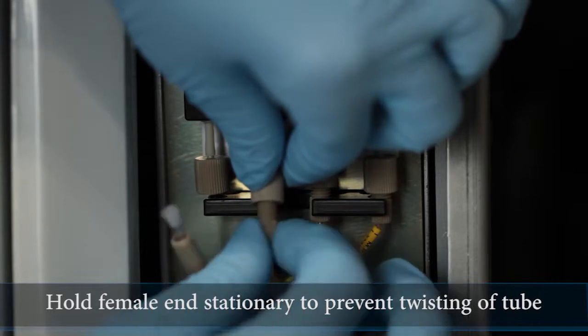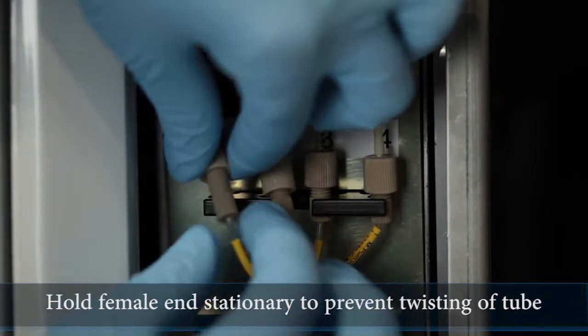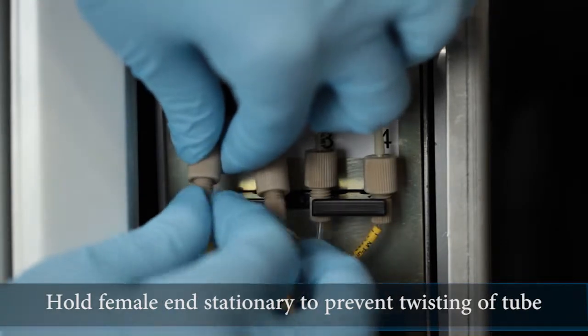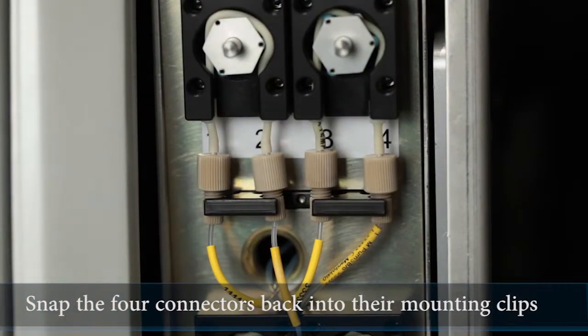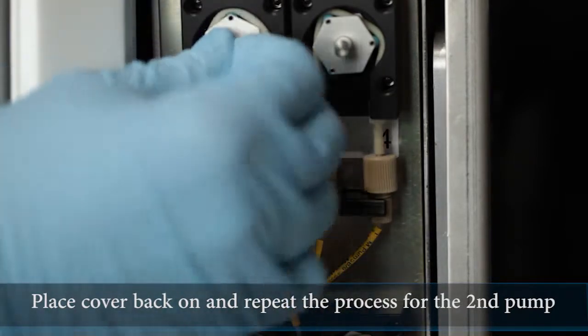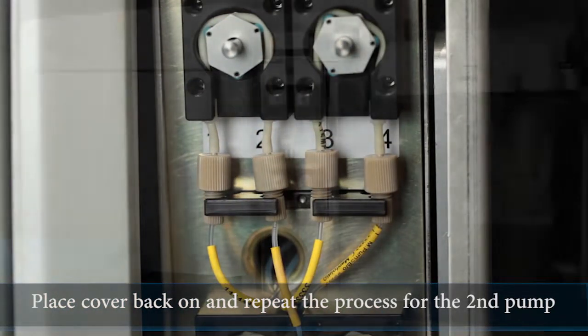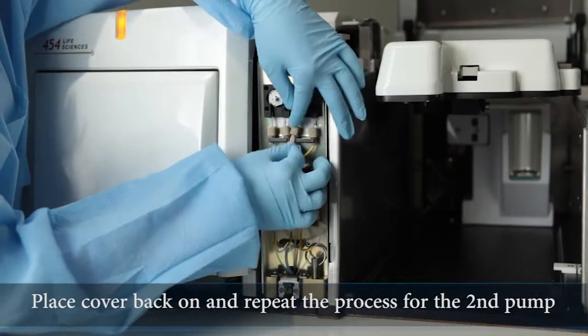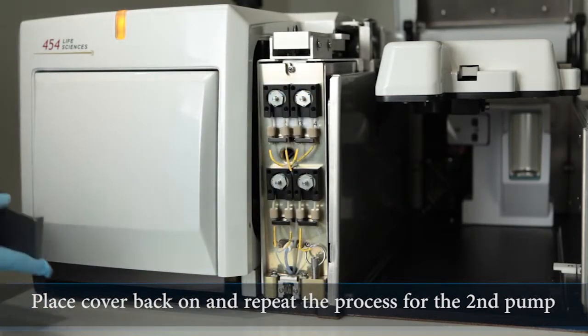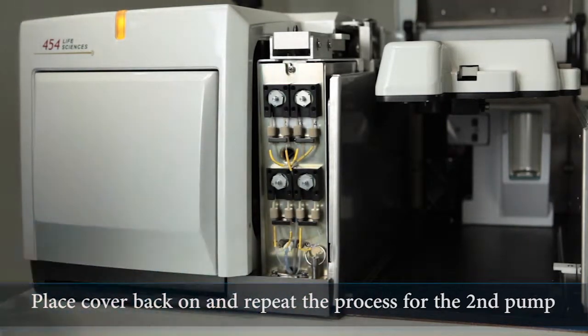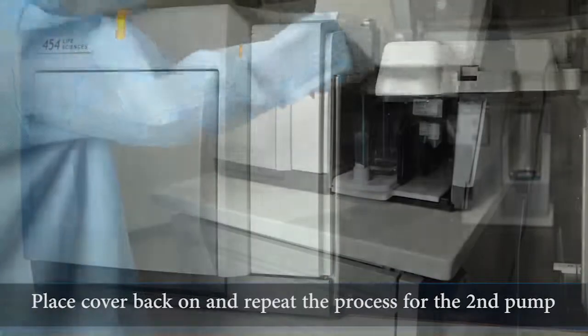When screwing together the male and female tubing ends, holding the female end stationary while turning the male connector end will prevent twisting of the tubing inside the pump housing, which would likely cause reduced pump performance and could increase chances of tube failure. Snap the four connectors back into the mounting clips, place the cover back on, and repeat the process for the second pump.